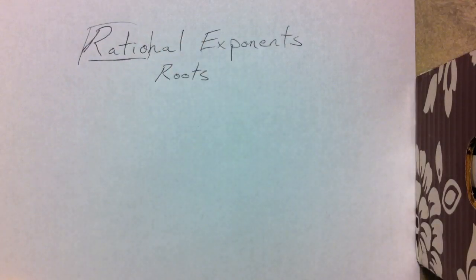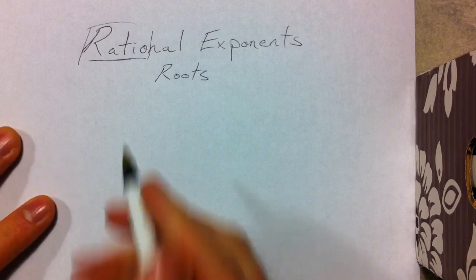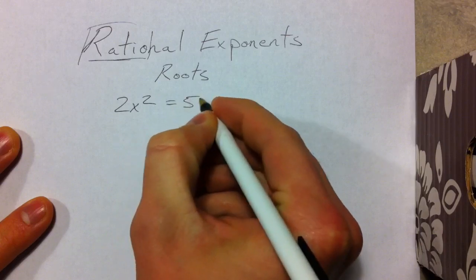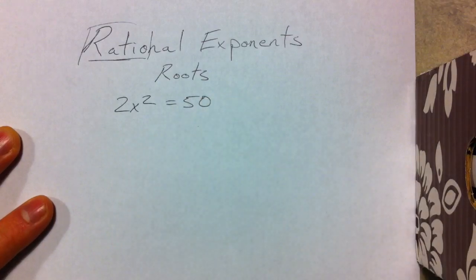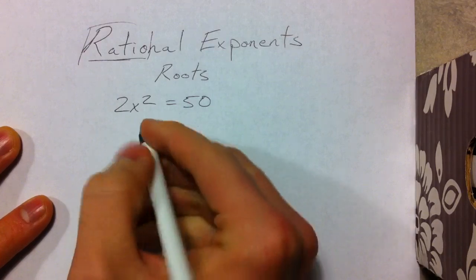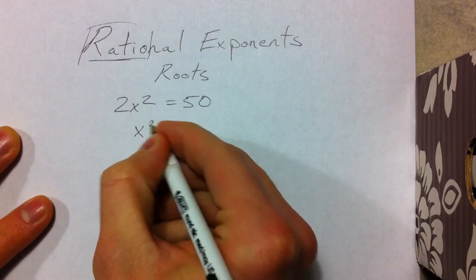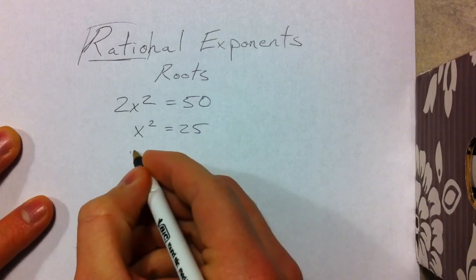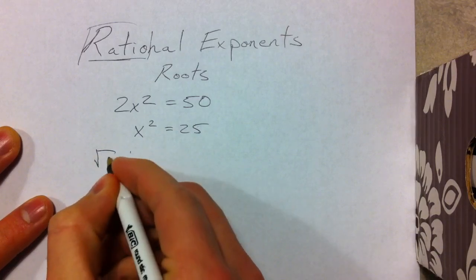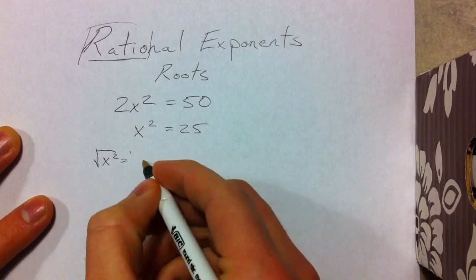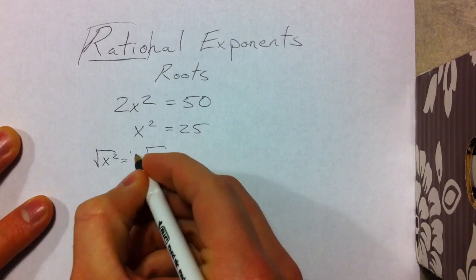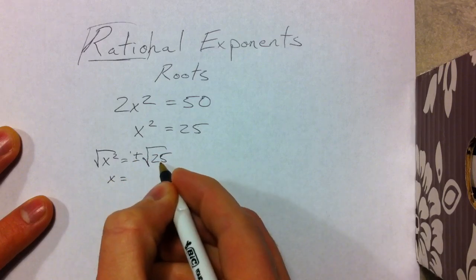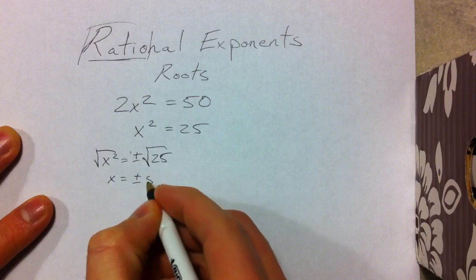We've been dealing with them all along, just in disguise. You've solved equations like 2x squared equals 50, and you actually used fractional exponents — you just didn't think about it as such. You divided by 2, got x squared equals 25, then took the square root of both sides, remembering plus or minus, so x equals plus or minus 5.